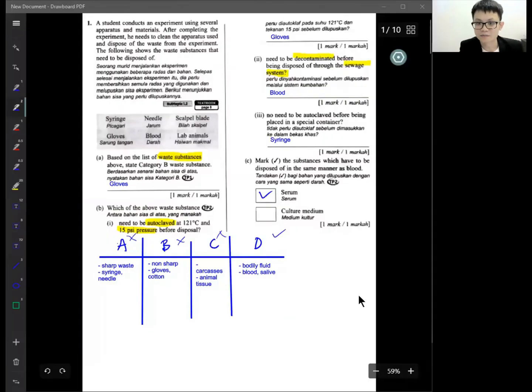Serum is something like antibody injected into the body. So why serum, not culture medium? Serum is like the antibody, and culture medium is like the thing that you want to culture inside the petri dish, whether it is bacteria or anything.